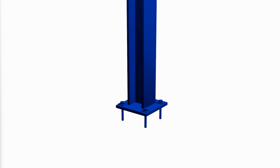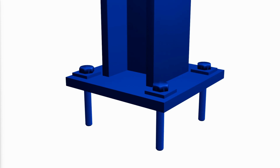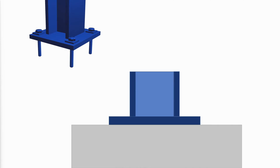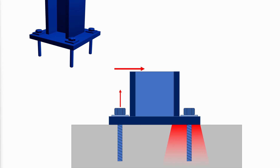Column base plate connections are the crucial interface between the steel structure and the foundation. These connections are used in buildings to support gravity loads which bear on the concrete foundation, as well as the lateral loads that are resisted by the anchor rods and the concrete bonding to it. In addition, they are used for mounting equipment and in outdoor support structures where they may be affected by vibration and fatigue due to wind loads.